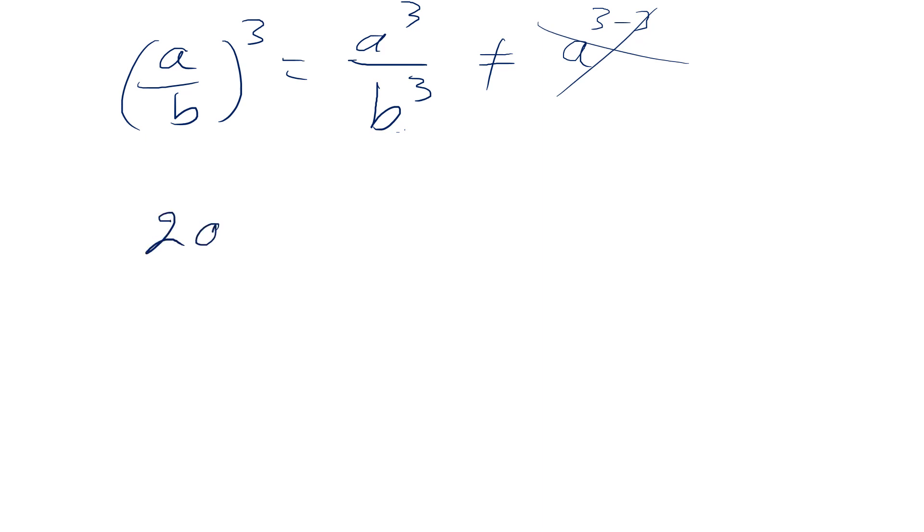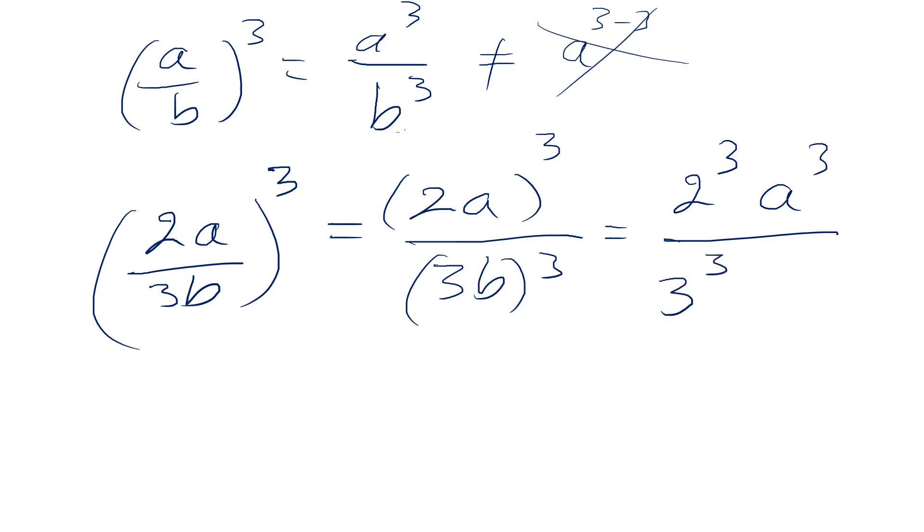If a few things get mixed, say (2a)/(3b) cubed, then this is 2a cubed and 3b cubed. You see, it kind of splits in stages. Then this is 2^3 and a^3, and this is 3^3, and this is b^3. Then you can always examine whether the 8 and 27 simplify. That's it.